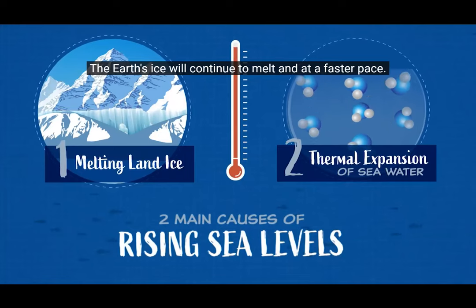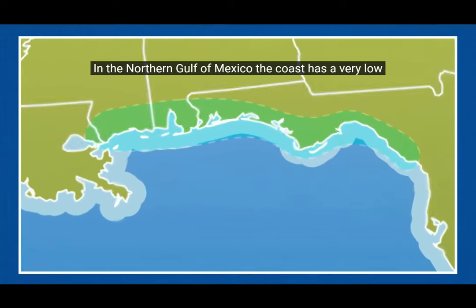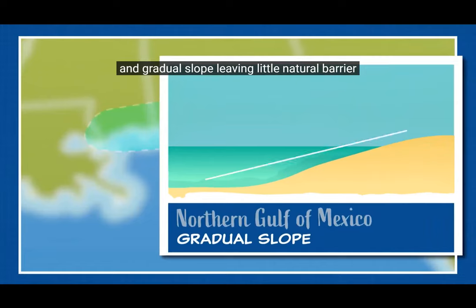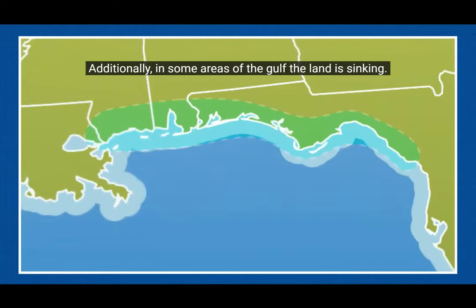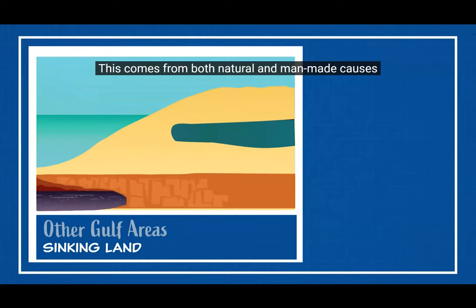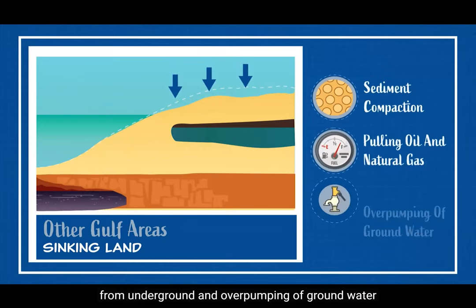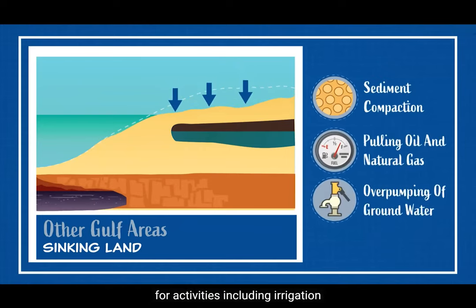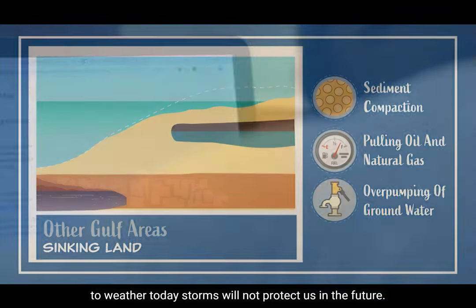The Earth's ice will continue to melt at a faster pace. Every coastal community will experience sea level rise differently. In the northern Gulf of Mexico, the coast has a very low and gradual slope, leaving little natural barrier for increasing seas — so small increases in sea level have more noticeable impacts. Additionally, in some areas of the Gulf the land is sinking, from both natural and man-made causes like sediment compaction, pulling oil and natural gas from underground, and over-pumping of groundwater. As the land sinks, the impact of rising waters increases, meaning coastal defenses designed for today's storms will not protect us in the future.